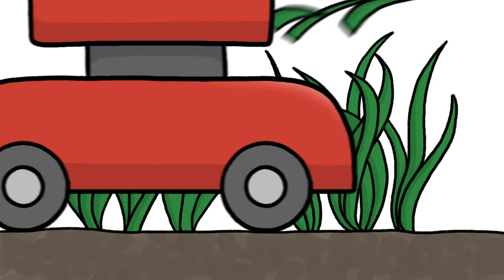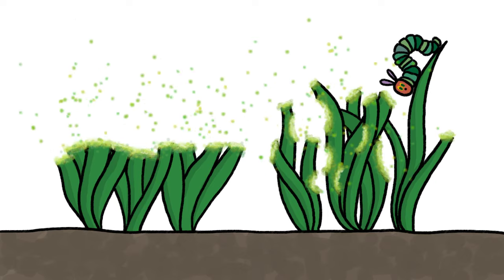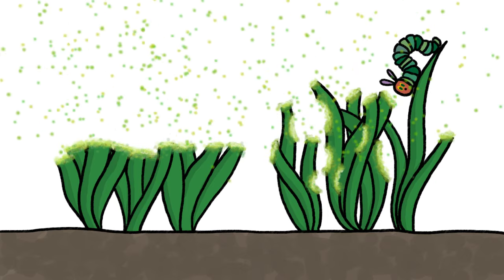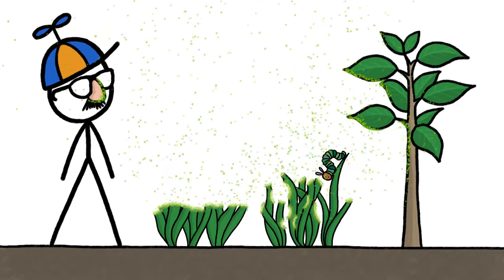When a plant is injured, say, by the spinning blades of a lawnmower or a very hungry caterpillar, pungent chemicals pour out of the wounds, waft into the air, and stick in our noses, and also to the leaves and stems of nearby plants.